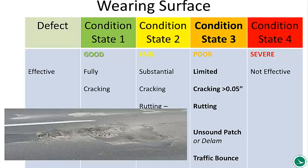An important note about wearing surfaces in condition state 4: for national bridge elements or structural elements that carry live load and dead load through the load path, placing something in state 4 triggers an analysis, and within a 90-day period the reviewer must decide whether that quantity should be moved back to state 3. That's not the case with non-structural elements — in this case, wearing surface or bridge management elements. They're not responsible for transmitting live load through the load path. So once a quantity goes into state 4, it can stay there. There's no analysis period and no structural analysis required. That's the key difference between national bridge elements and bridge management or agency-developed elements — there's no back and forth from 4 to 3.